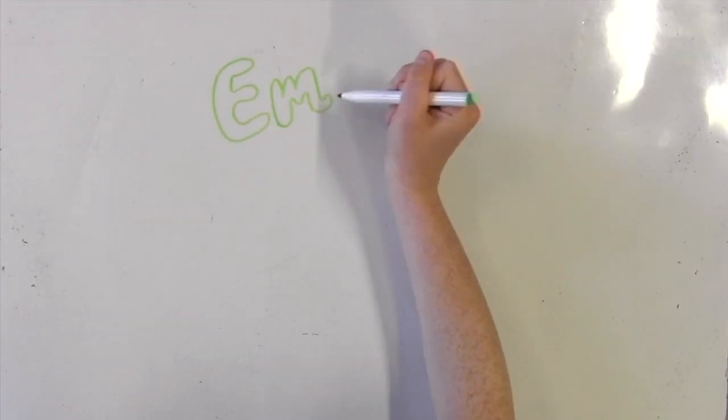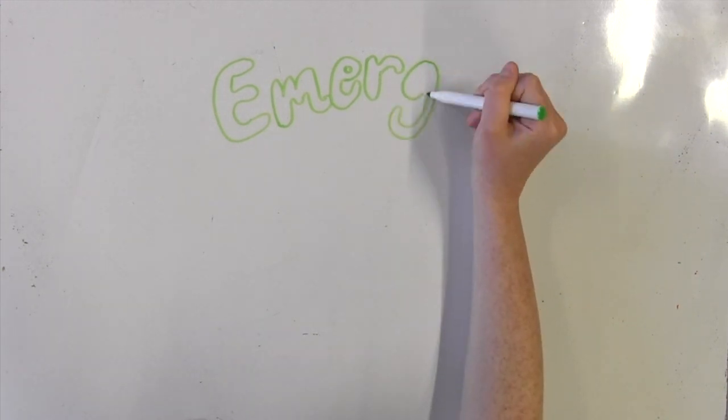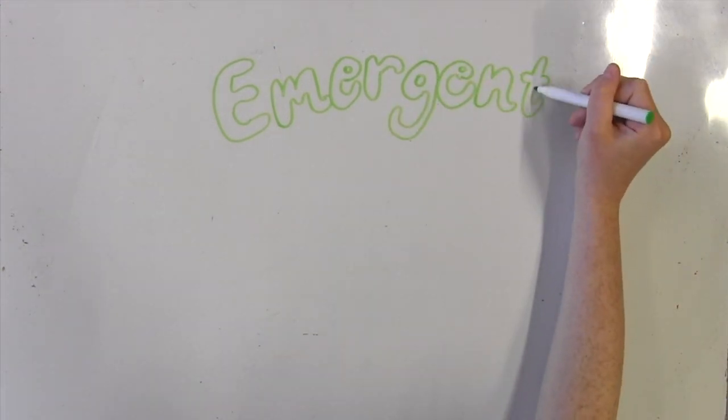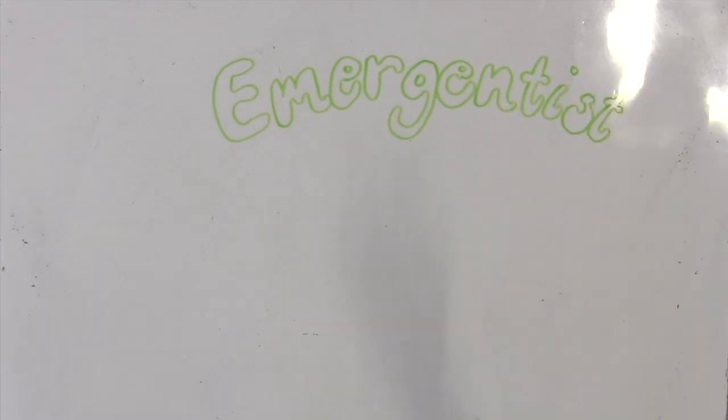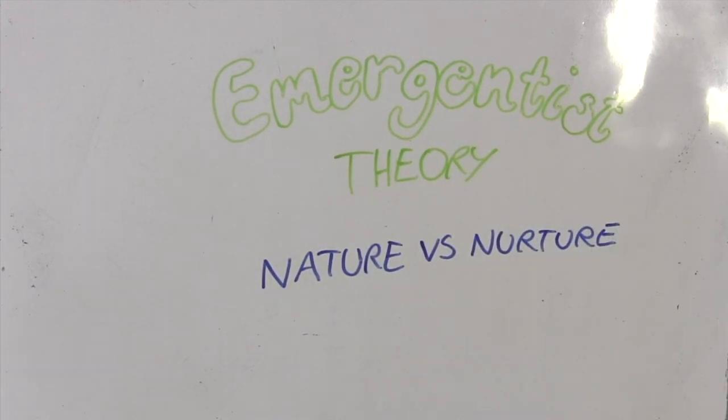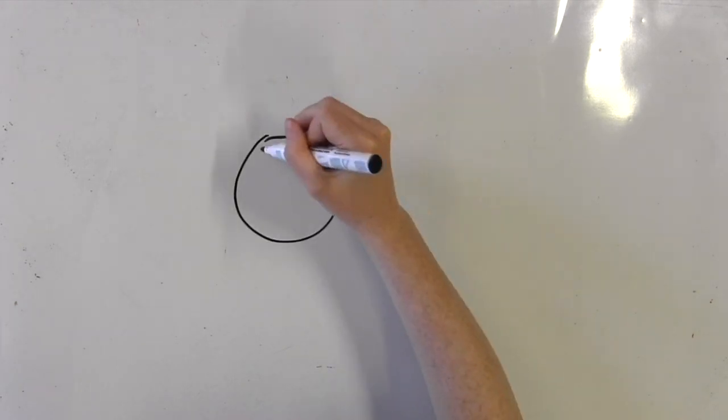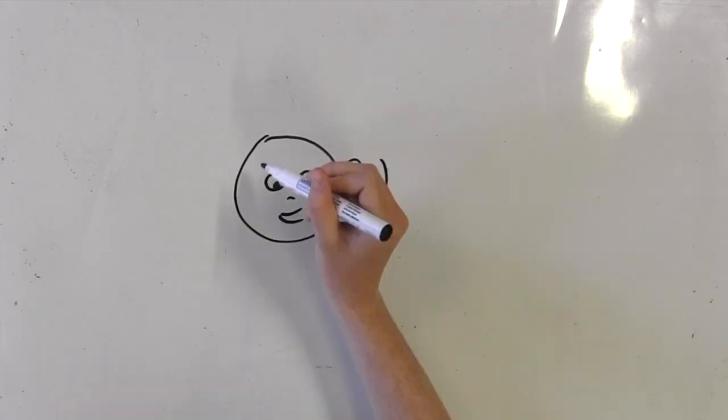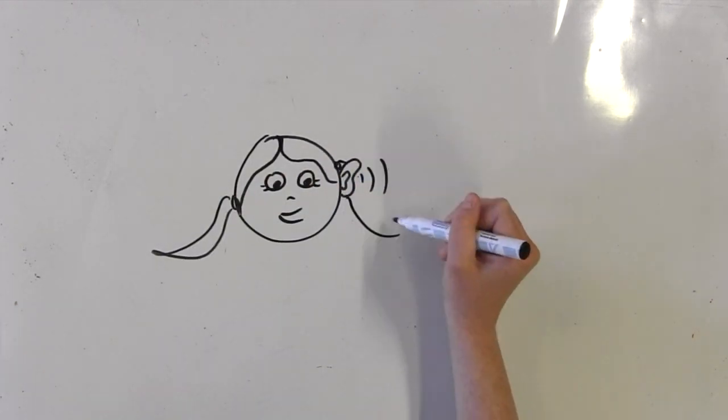Finally, there is one more theory that says it is a mixture of all the theories that we have talked about today. It is called emergentist theory. You might have heard of nature versus nurture before. The emergentist theory is the same. It says that a child learns a language because of both nature and nurture.